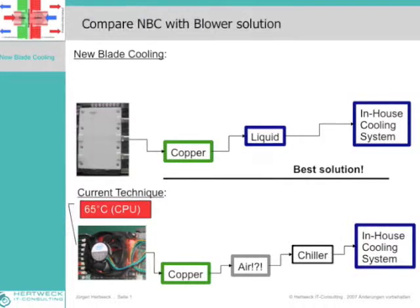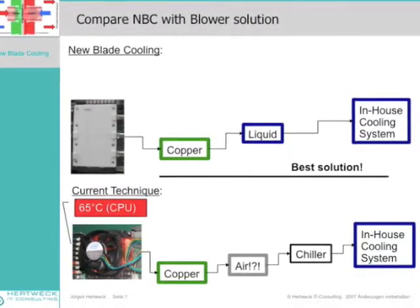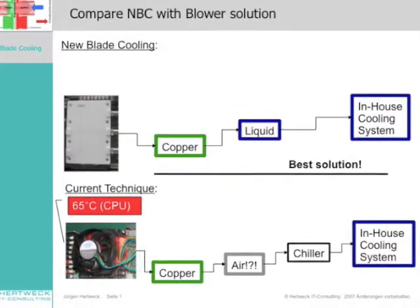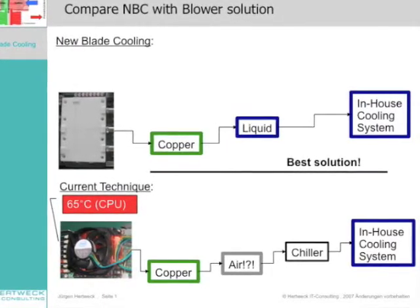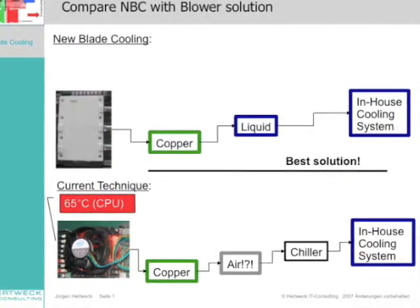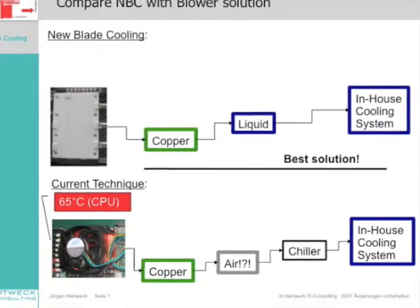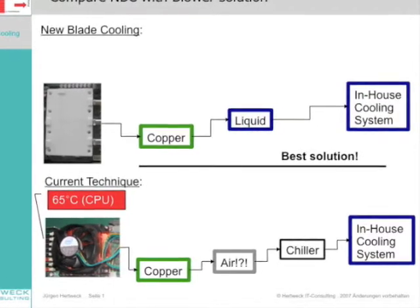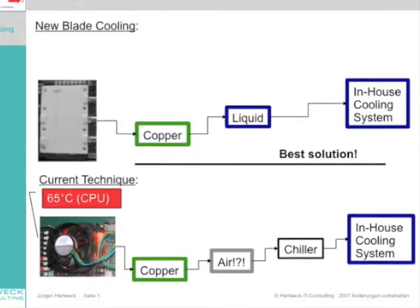Now, let's have a look at the comparison of the NBC with a conventional blower system. The CPU temperature of a blower system usually increases up to 65 degrees Celsius, which is a critical temperature inside the chip. Those systems have a heat transfer to an air cooler, air flow and a water air chiller. This chiller has to be cooled by the in-house cooling system.